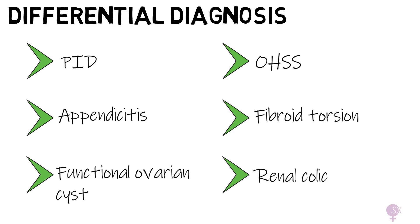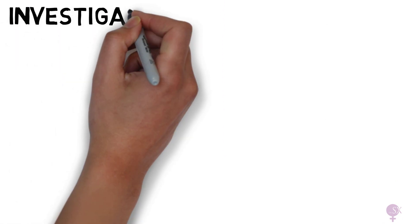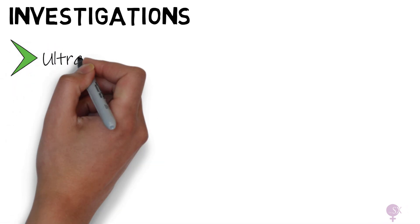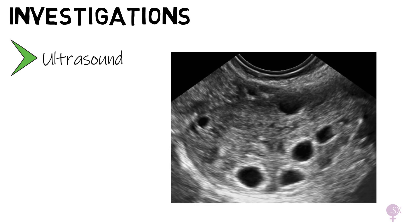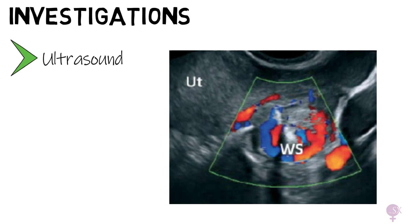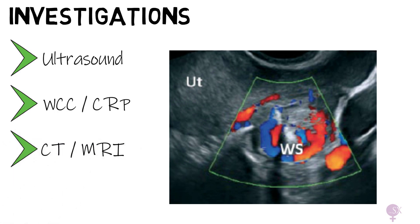To help navigate through these differential diagnoses, besides history and examination we have investigations. Ultrasound is the bread and butter of a gynecologist. On ultrasound we notice an enlarged, edematous ovary, and torted ovaries tend to have follicles pushed to the periphery. A whirlpool sign can sometimes also be identified with color Doppler, which is portrayed in the twisted pedicle. Inflammatory markers will usually also be raised, and in some cases, especially if the diagnosis is unclear, we can perform a CT or MRI scan.